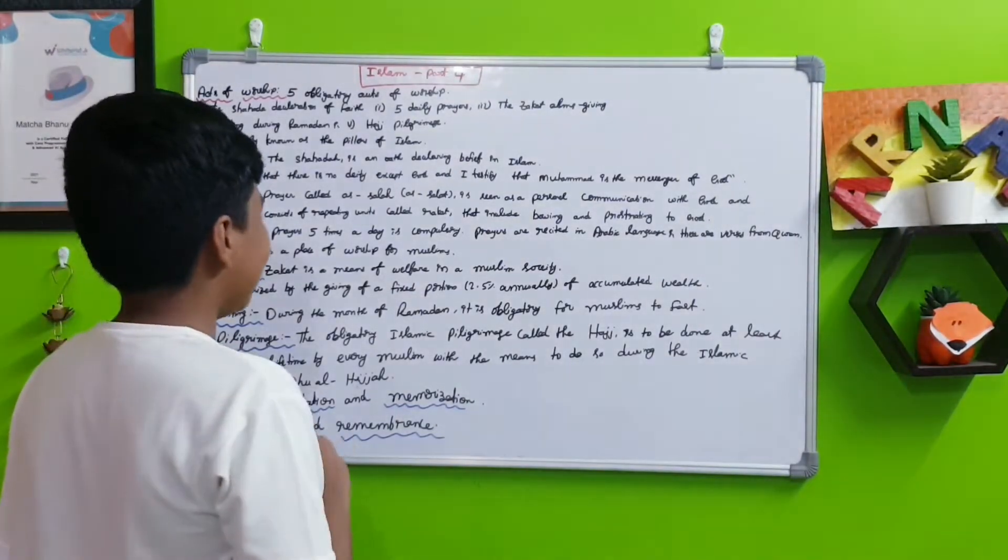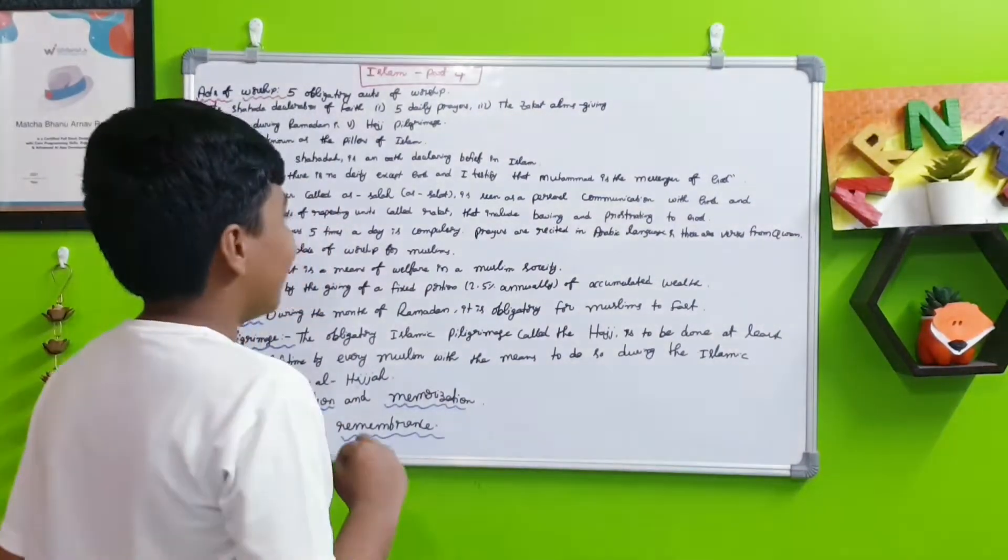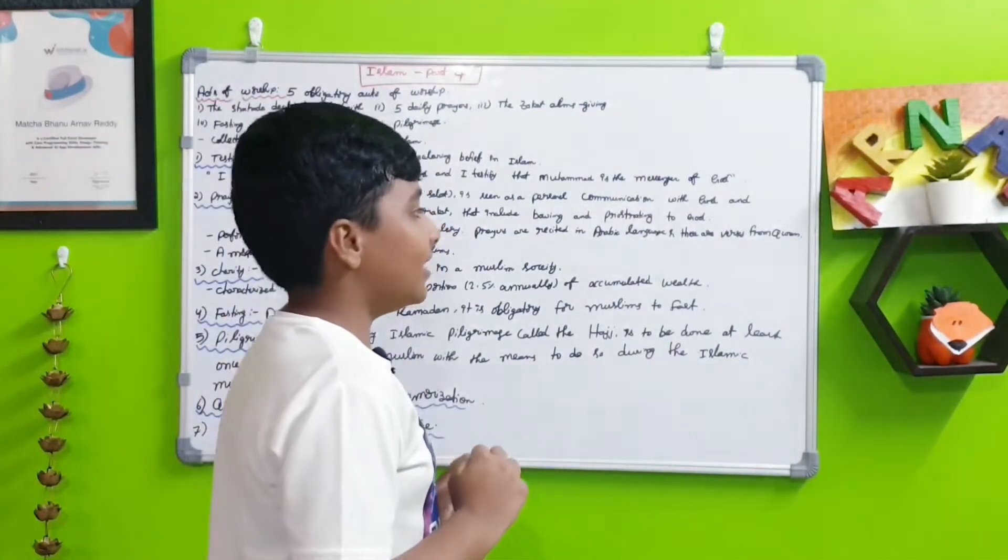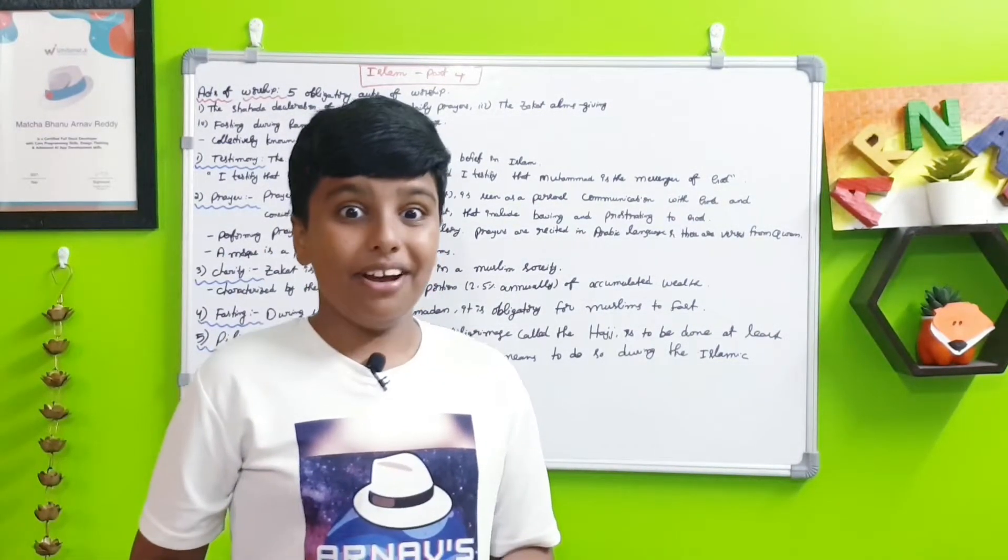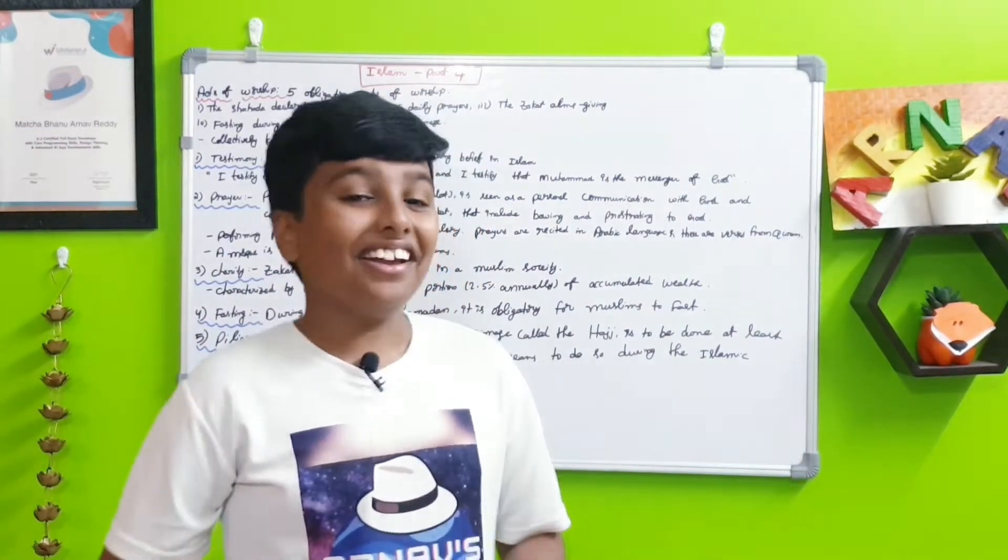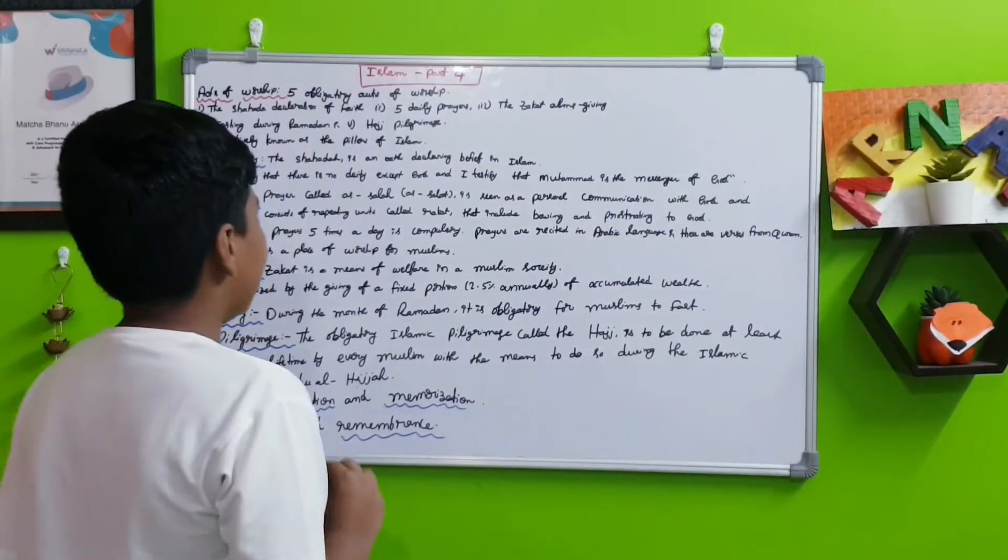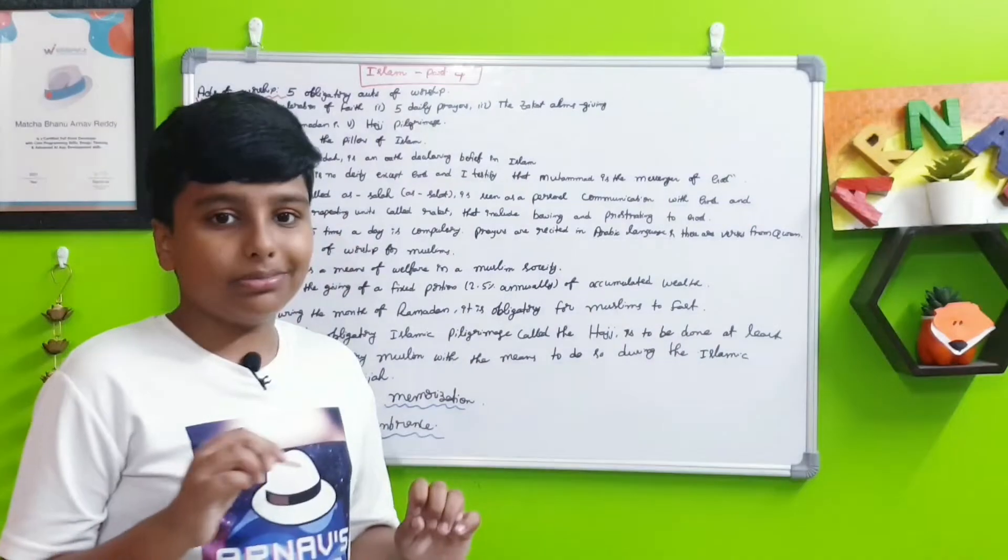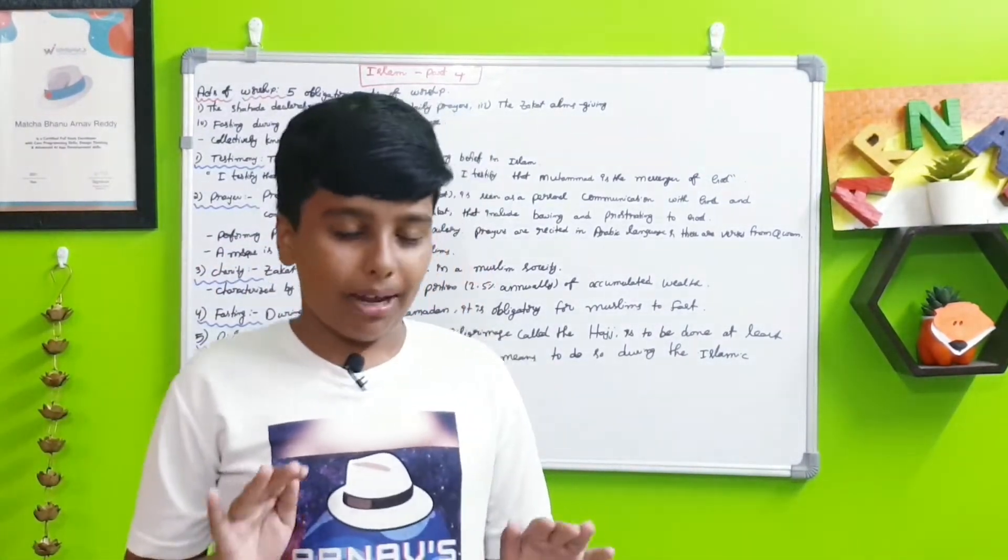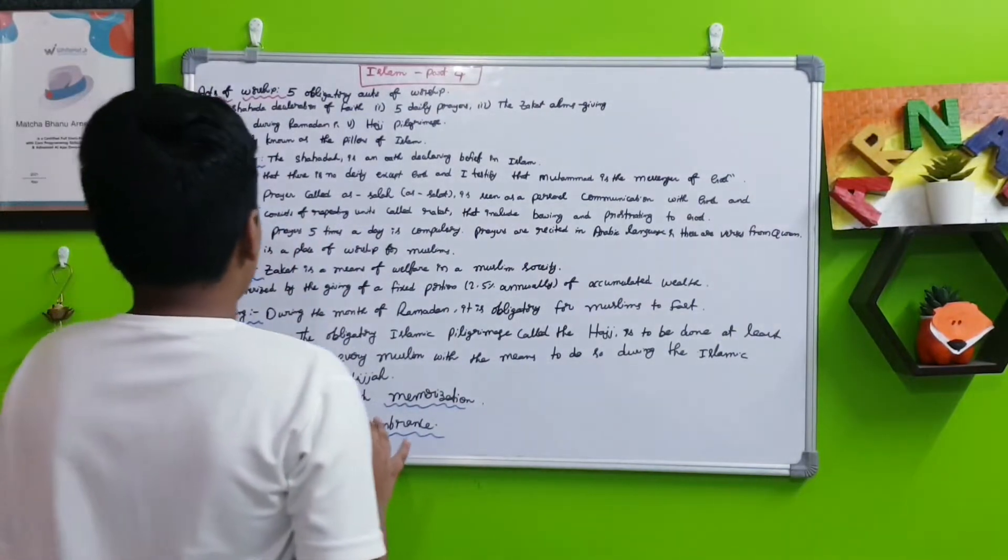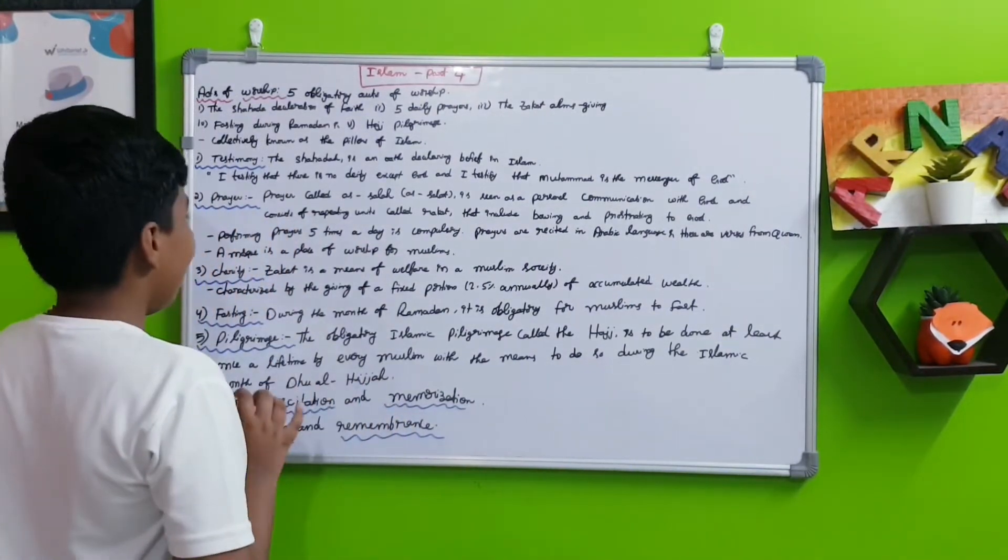Prayers are recited in the Arabic language, and these prayers are verses from the Quran, the most holy book in Islam. The mosque is a place of worship for Muslims. Muslims worship by praying there in the mosque. Muslims need to pray only while facing Mecca, which is one of the holy cities in Islam.